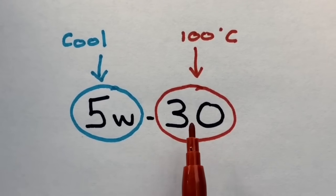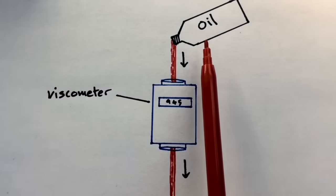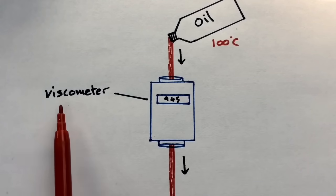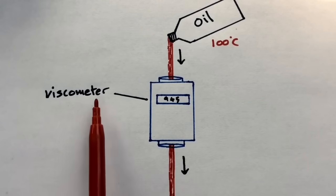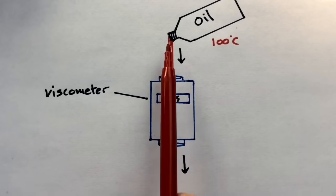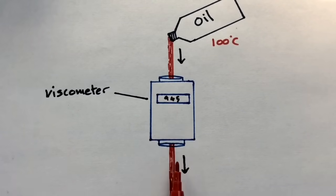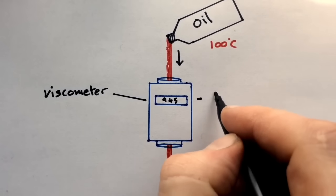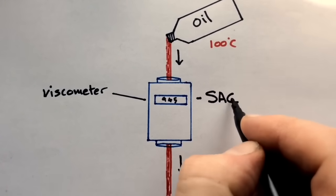So let's have a look at this number first and how we get to this figure of 30. In order to get this figure, oil heated to 100 degrees centigrade is passed through what we call a viscometer. When it enters the viscometer and runs straight through, it's timed, and depending on how quickly it runs through, a reading is given that relates to its SAE number.